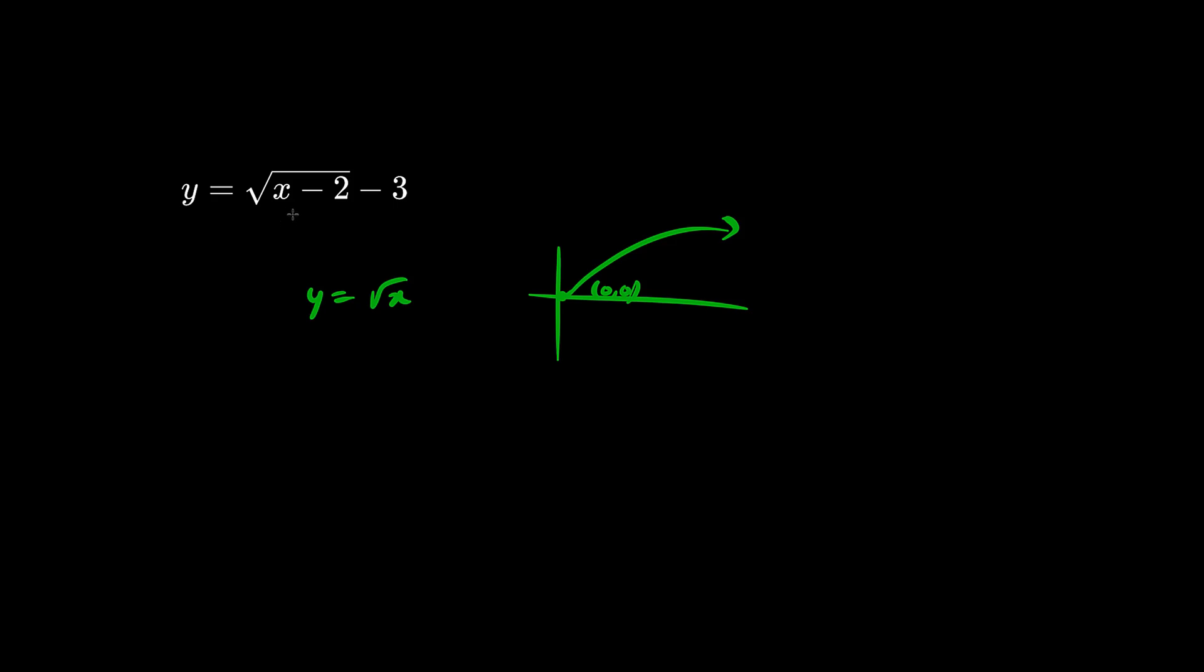Remember that for the x values, we go counter-intuitively two units to the right. So this origin goes two units to the right of the 0.